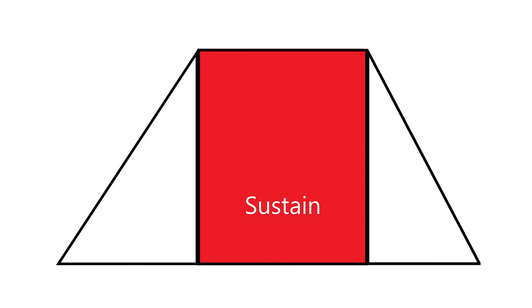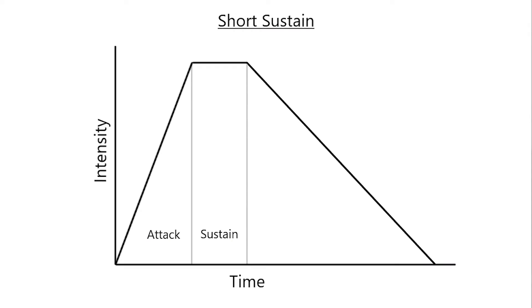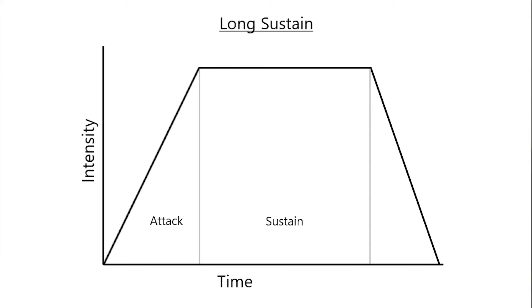Sustain is the duration of time a note is held at a steady intensity. Snare drums, banjos, and other percussive instruments are examples of instruments with short sustain time — once the note reaches its maximum intensity, it quickly begins its decay period. Instruments such as electric guitar, bowed string instruments, and wind instruments are capable of long sustain, where the musician can hold a note for a sustained period of time at a steady intensity.